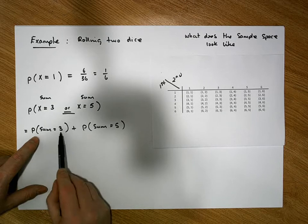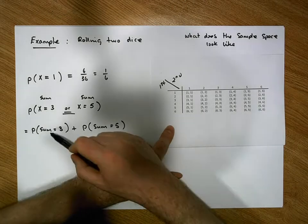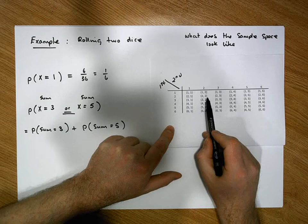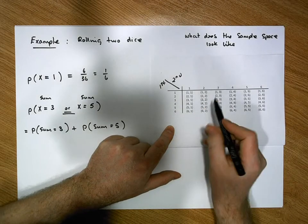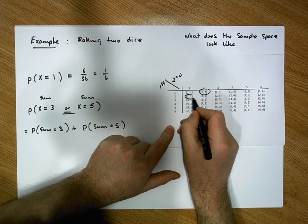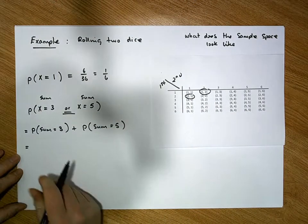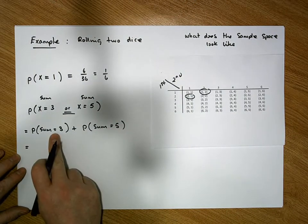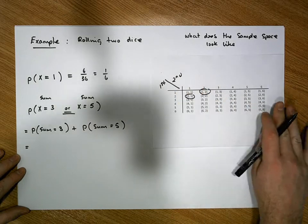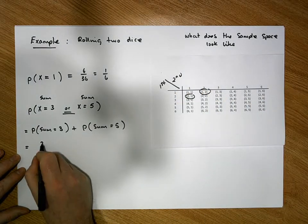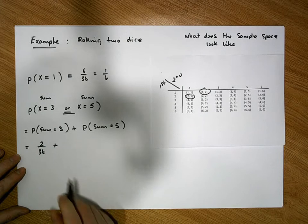What are the chances that the sum of the two dice equals three? Looking at our sample space, (1,2) gives us three and (2,1) gives us three — let's circle them. There are two chances, so rolling two dice with a sum equal to three gives you two chances out of 36.